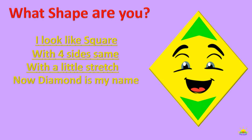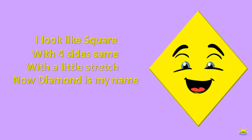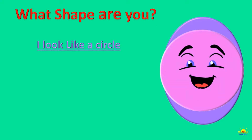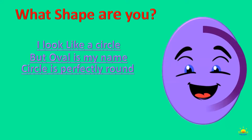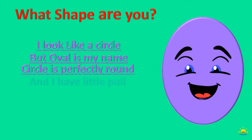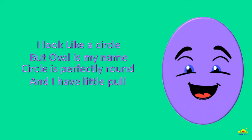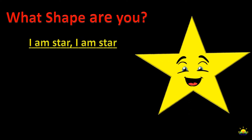What shape are you? I look like a square with four sides the same, with a little stretch. Now diamond is my name. What shape are you? I look like a circle, but oval is my name. Circle is perfectly round and I have a little pull.